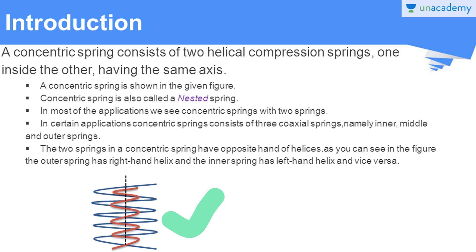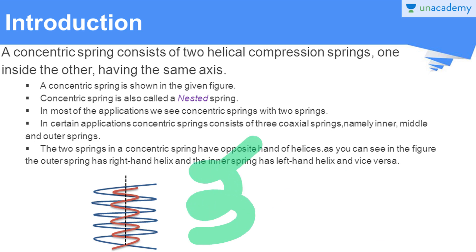The outer spring of the concentric spring is wound in the direction of the right hand — when you curl your right hand fingers with the thumb pointing up, the coil direction follows. The inner spring is wound in the left-hand direction. This direction is called the helix of the spring, and it is described by two values: right-hand helix or left-hand helix. Here, the outer spring has a right-hand helix and the inner spring has a left-hand helix.